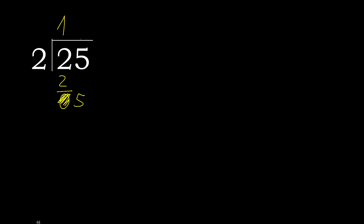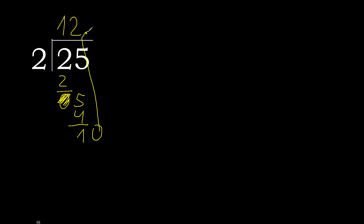Eliminate 0 on this side, bring down 5. 2 multiplied by 3 is 6 — 6 is greater. 2 multiplied by 2 is 4. 5 minus 4 is 1. Next: that is not a full number, therefore complete — always complete with 0. Place a decimal point here, complete with point.